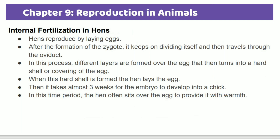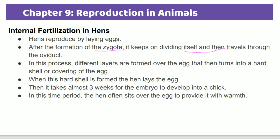Internal fertilization occurs in hens. After the zygote forms, it travels through the oviduct. During this process, different layers are formed over the egg, and then a hard shell or covering forms around the egg. Once the hard shell is formed, the hen lays the egg. The hen often sits on the egg to provide warmth.